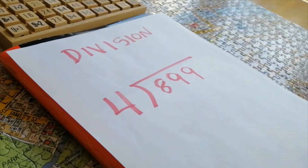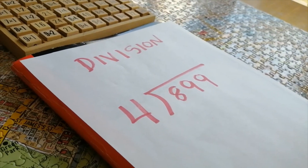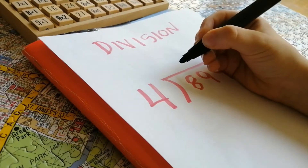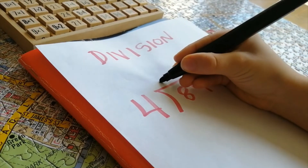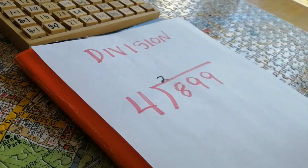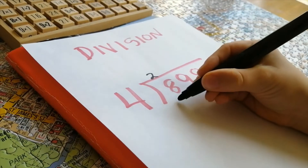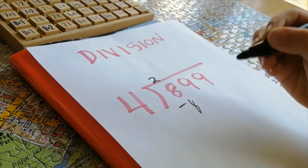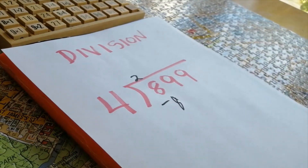¿Cuántas veces está el 4 en el 8? 2. 4 por 2, 8. Menos 8, 8 menos 8, 0.